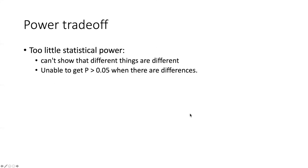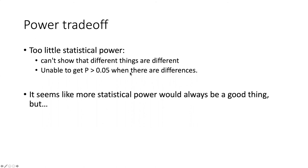So based on what I said here, it seems like having too little statistical power is really the big problem. If we have too little statistical power, we can't show that different things are actually different and we can't get p to be less than 0.05 when there actually are differences. So it seems like having more statistical power would always be a good thing.